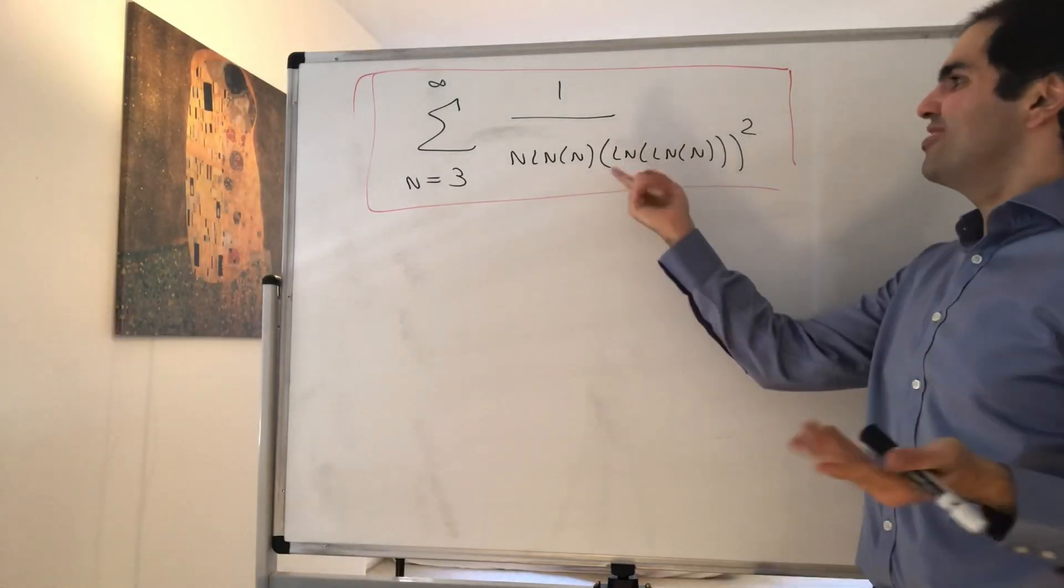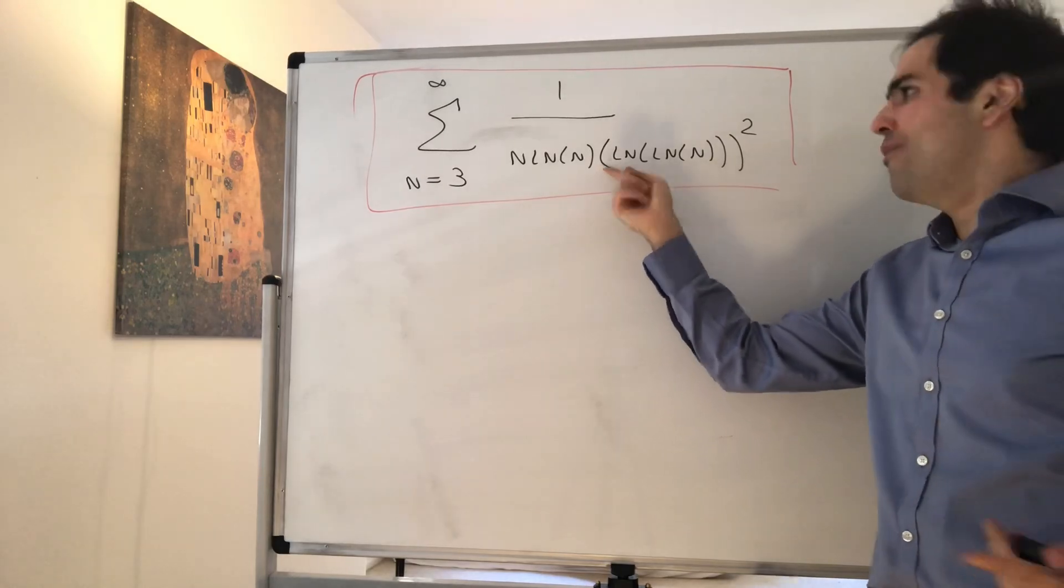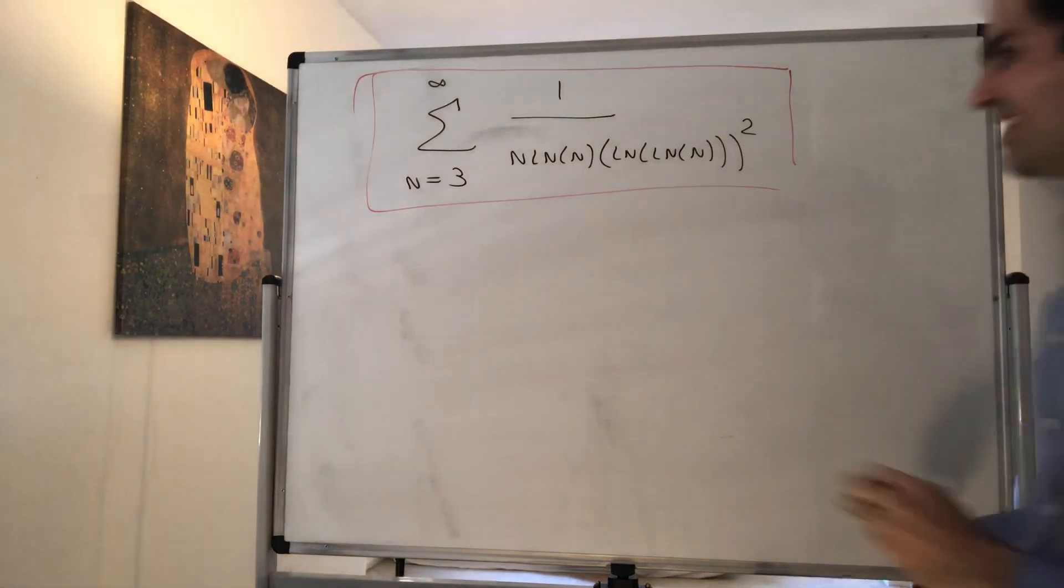Alright, thanks for watching, and since this was so much fun, let's evaluate the following series where here we have a square in our ln of ln of n.